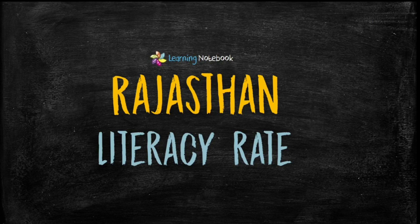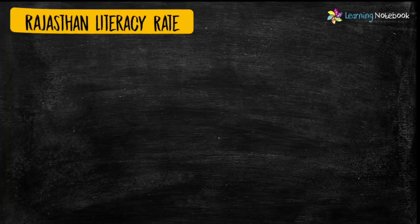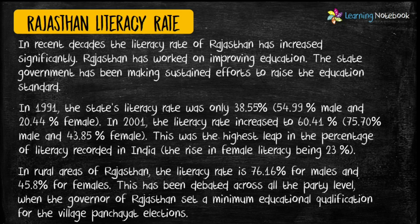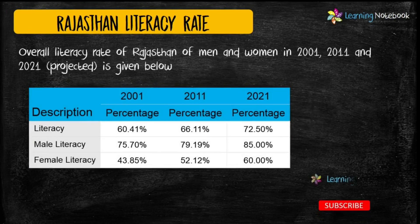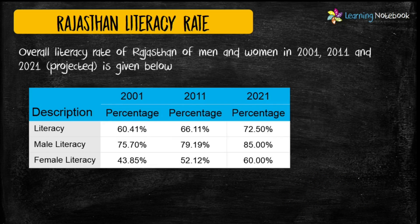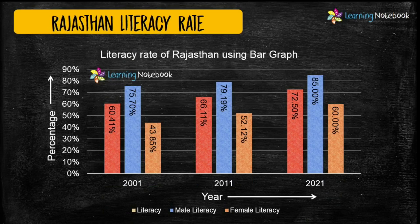Next idea is depicting literacy rate of Rajasthan. Here we have used a triple bar graph to show overall literacy rate, male literacy rate, and female literacy rate of Rajasthan.